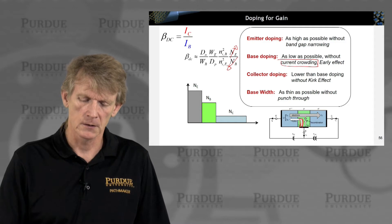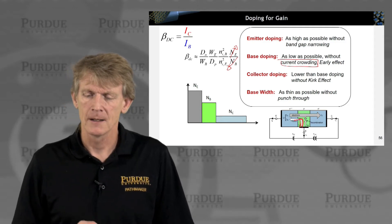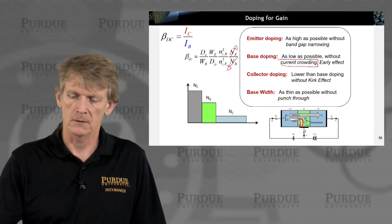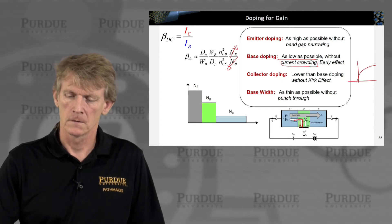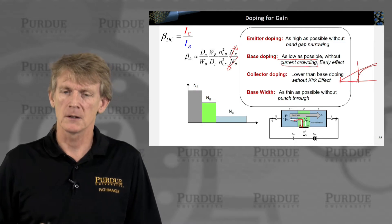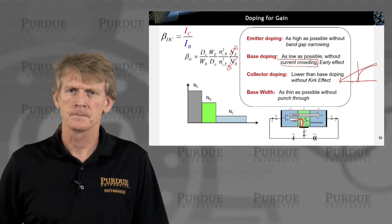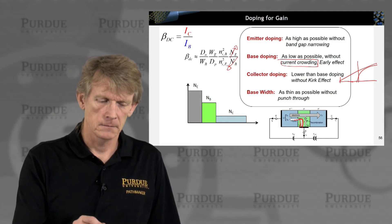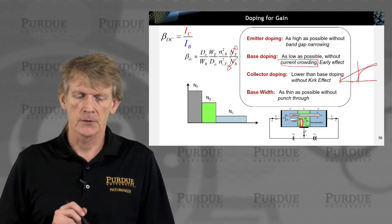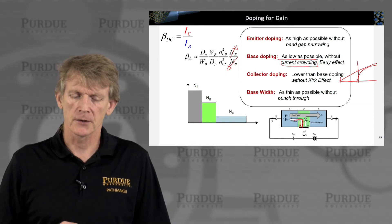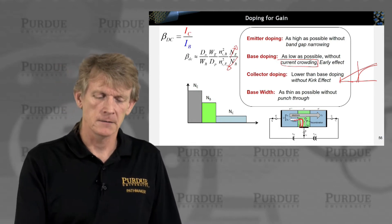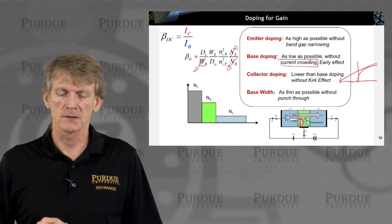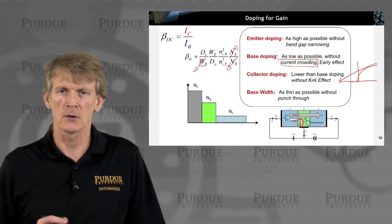This flow of holes over here, you don't want to have resistive losses and you don't want to have the early effect. You want to have a large VA. Collector doping, bring that down through the capacitance but without the Kirk effect and then reduce this as much as possible without punch. Those were the recipes.